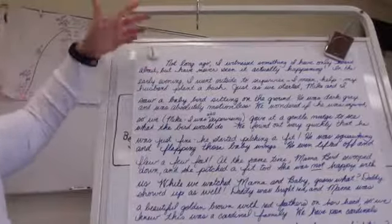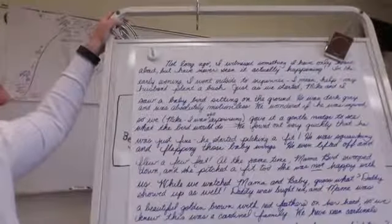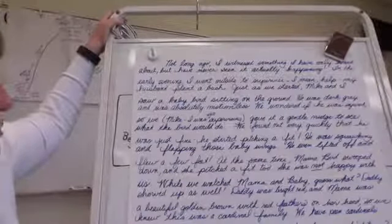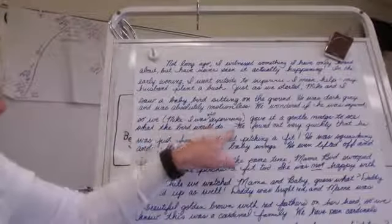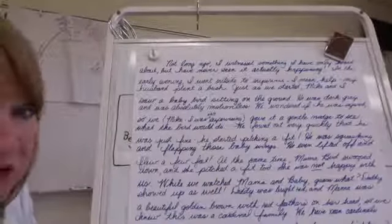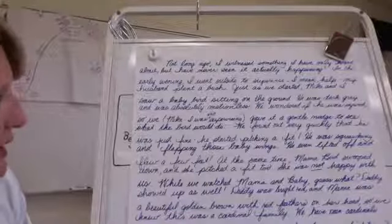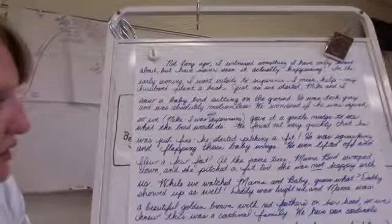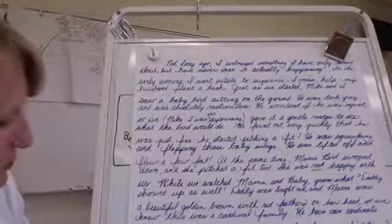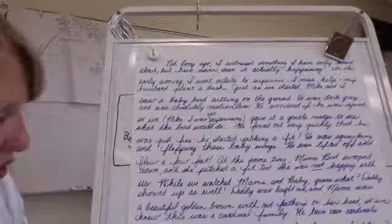Then I went on to say: in the early evening I went outside to supervise — I mean help — my husband planted a bush. Just as we started, Mike and I saw a baby bird sitting on the ground. He was dark gray and was absolutely motionless. We wondered if he was injured. So we — Mike, I was still supervising — gave it a gentle nudge to see what the bird would do. We found out very quickly that he was just fine. He started pitching a fit. He was squawking and flapping those baby wings. He even lifted off and flew a few feet. At the same time, mama bird swooped down and she pitched a fit too. She was not happy with us. While we watched mama and baby, guess what? Daddy showed up as well. Daddy was bright red and mama was a beautiful golden brown with red feathers on her head. So we knew this was a cardinal family.